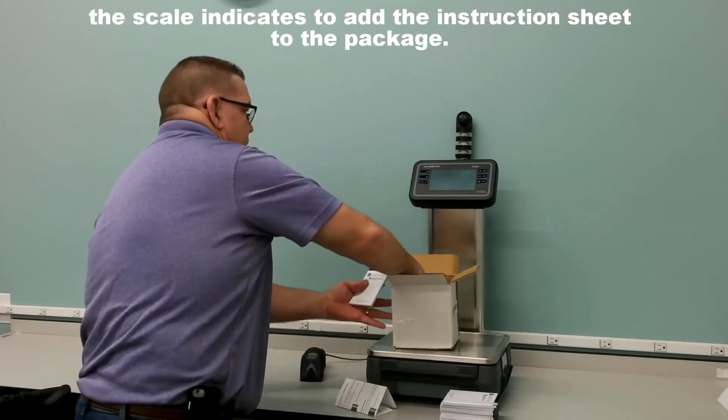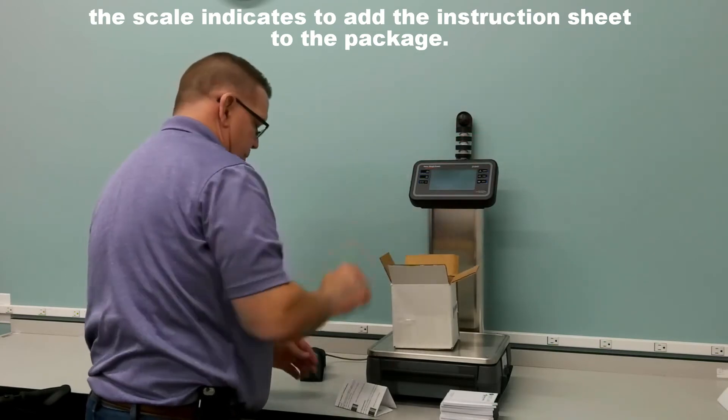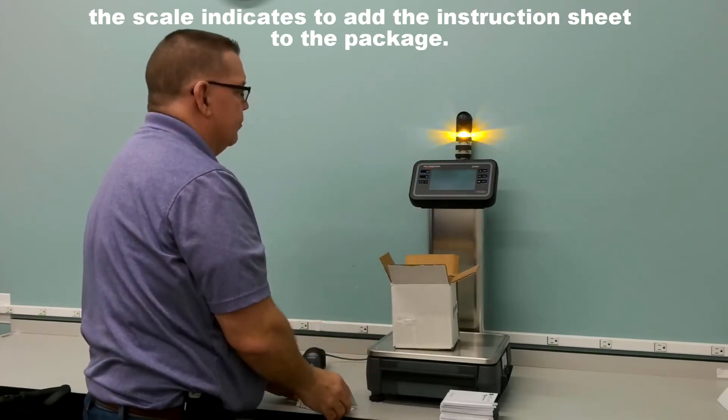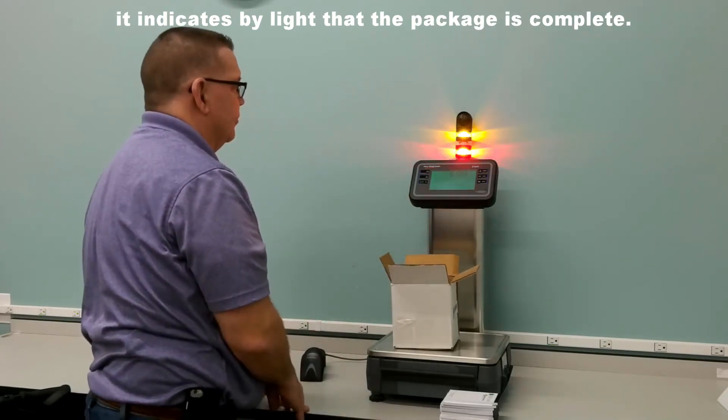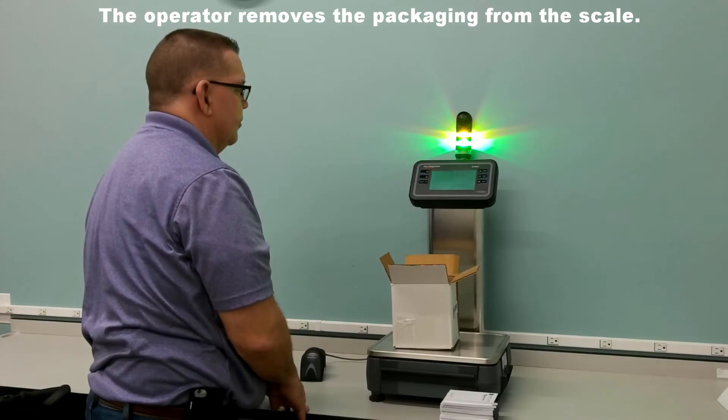the scale indicates to add the instruction sheet to the package. When it sees the instruction sheet added to the package, it indicates by light that the package is complete and the operator removes the packaging from the scale.